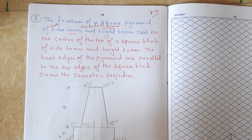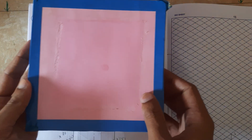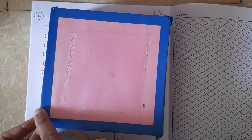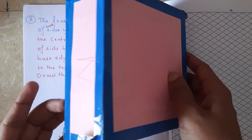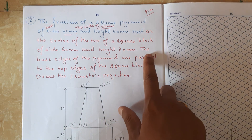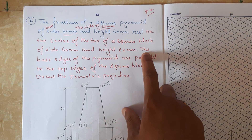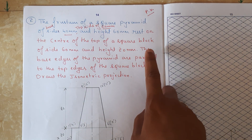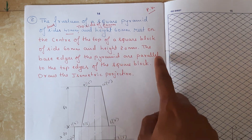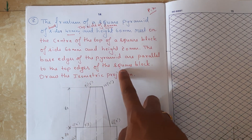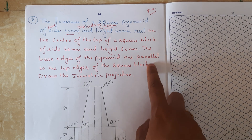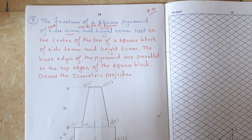So we have a square block which has sides of 60 mm and height of 20 mm. The base edges of the pyramid are parallel to the top edges of the square block, and this is placed centrally.